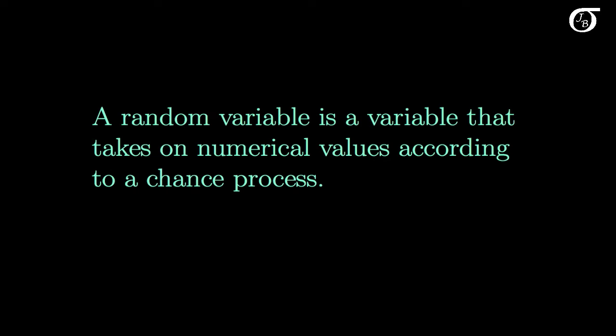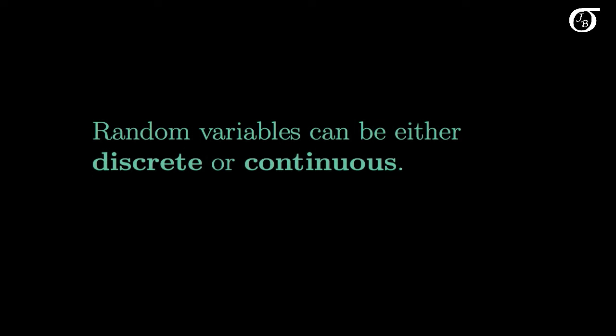A random variable is a variable that takes on numerical values according to some sort of chance process, meaning there is some sort of randomness involved. Random variables can be either discrete or continuous, and this is going to be an important distinction for us because we're going to have to handle these situations a little bit differently.